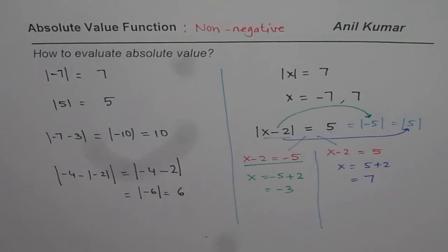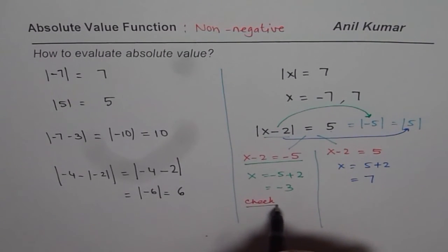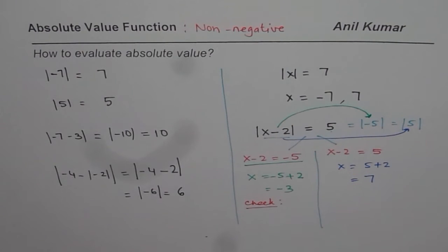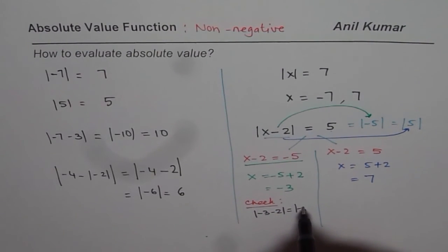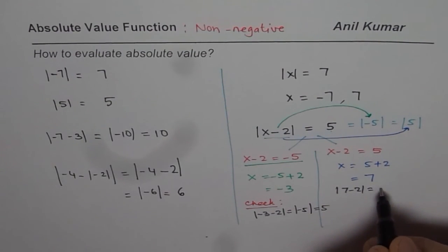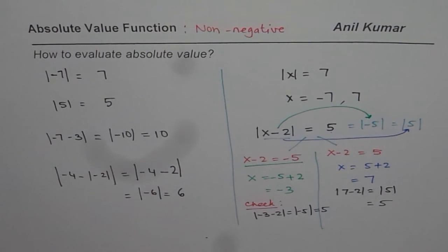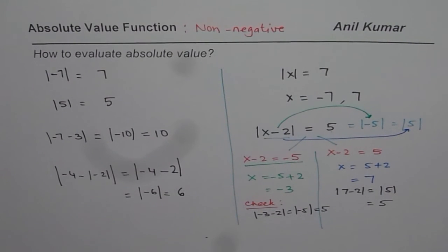These are the two solutions and you can always check your solutions. If I substitute -3, I get -3 minus 2, which is absolute value of -5, which is indeed 5. On the other hand we have 7, so we have absolute value of 7 minus 2, which is absolute value of 5, which is indeed 5. So both solutions are correct.